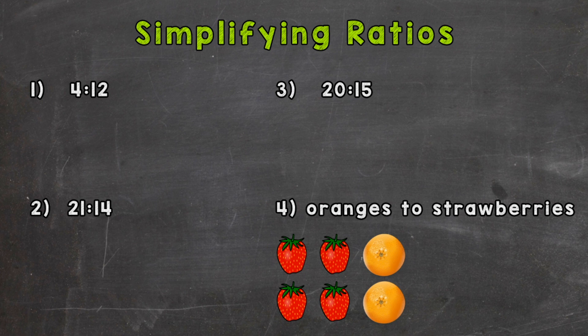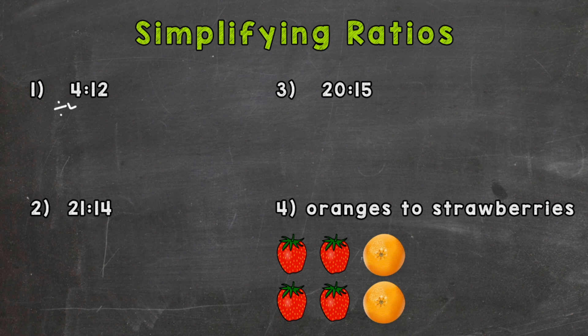For number one, we have a ratio of 4 to 12. So what's a number that can go into both 4 and 12? And you want the greatest. Two can go into both 4 and 12, but there's something greater than two — and it's four. We can divide 4 by 4 and 12 by 4. So if we do that, 4 divided by 4 and 12 divided by 4, we end up with 1 to 3. That would be our simplified ratio.